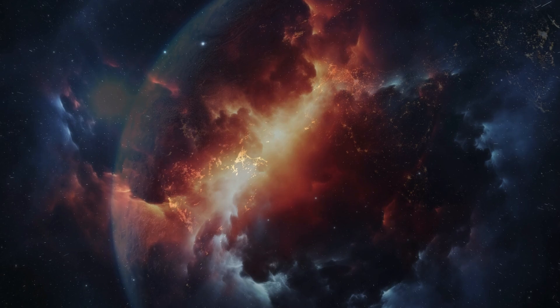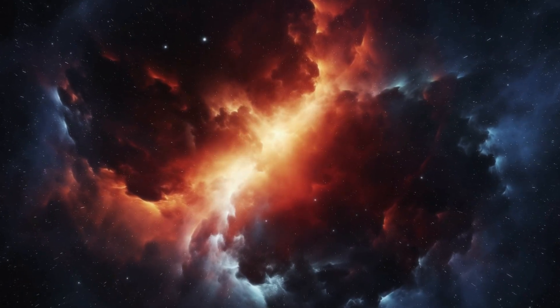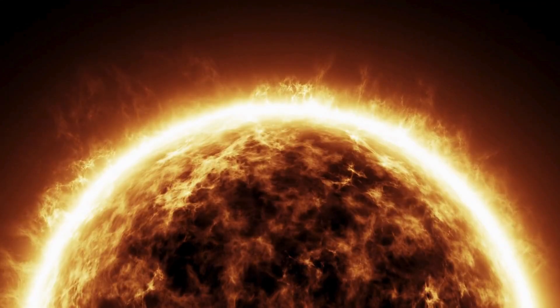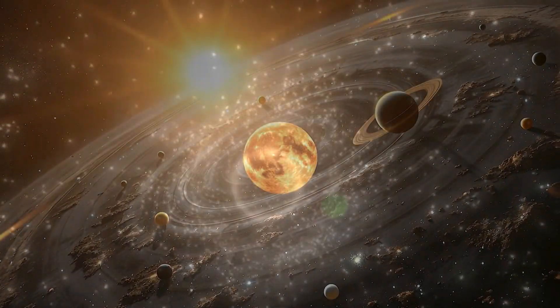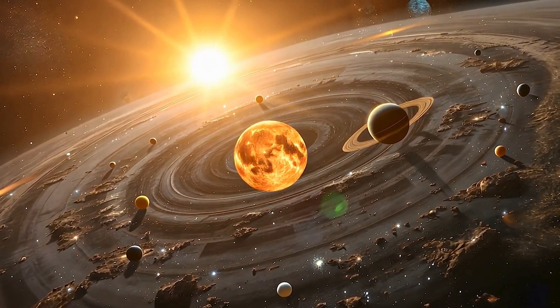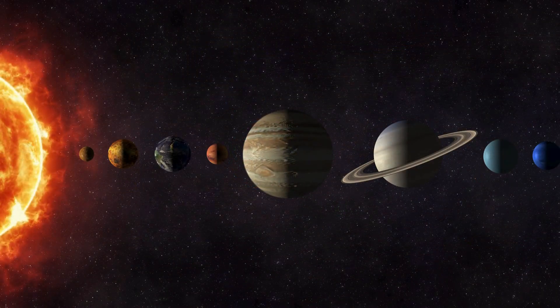Earth's location in the Milky Way's galactic habitable zone provides some protection. This region is relatively sparse in massive stars, reducing the likelihood of nearby supernovae or GRBs.